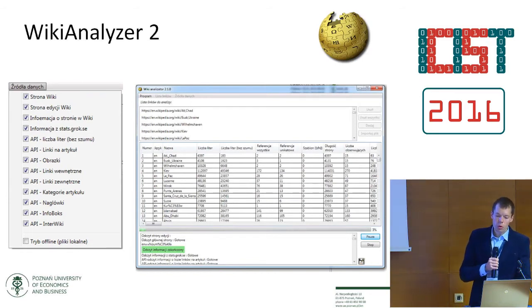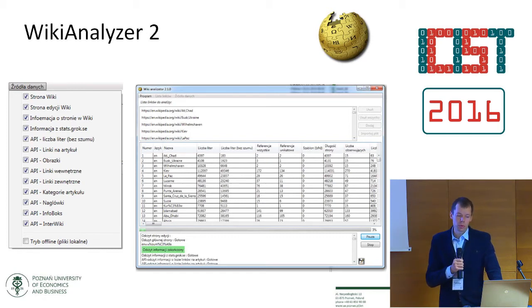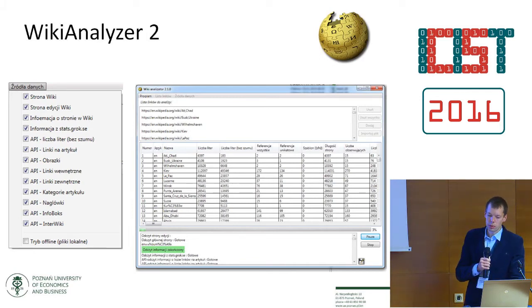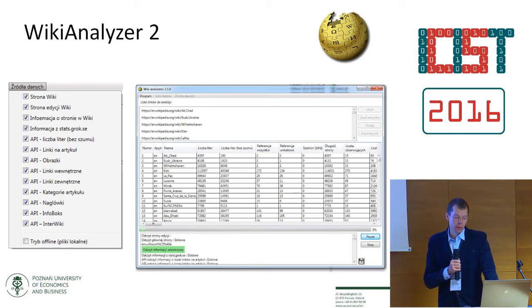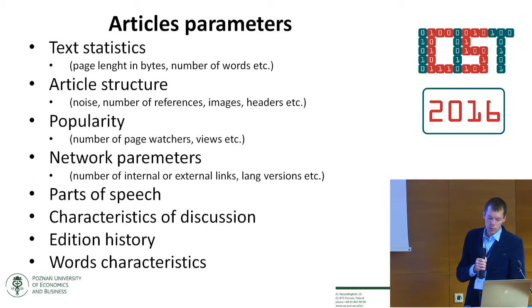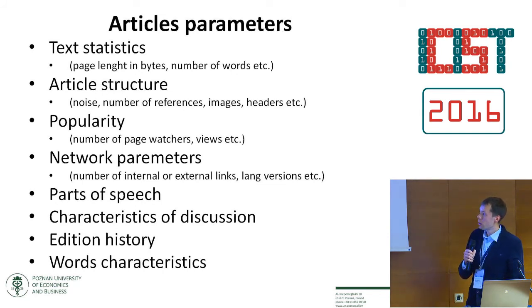In order to explore the possibilities of building a quality model, we first prepared a training dataset. Using the Wikipedia API, it is possible to obtain a list of articles belonging to certain classes. Using this software, we extracted numerous parameters characterizing articles, such as length, number of letters, references, observers, edits, internal links, external links, and so on. We have 185 parameters in our research. These parameters can be divided into different categories, for example: text statistics, parameters related to article structure, popularity, and others.